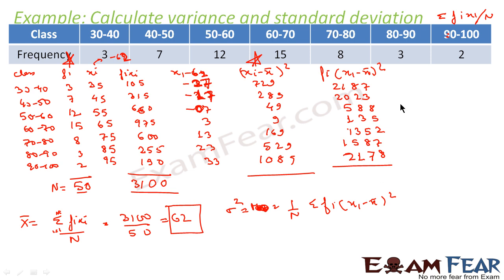We'll add these values: 2187 plus 2023 plus 588 plus 135 plus 1352 plus 1587 plus 2178. Adding step by step, we get 10,050.